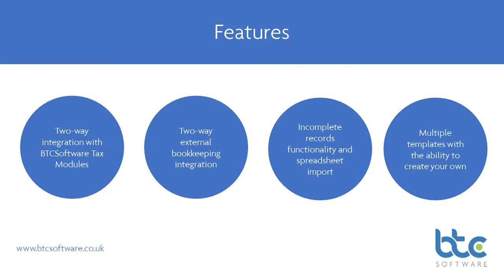Here are a few features of accounts production. You have two-way integration with BTC software tax, whether that be the partnership, corporation tax, or individual tax returns. You've got two-way external bookkeeping integration, which we'll look at in the demonstration. There's also incomplete records functionality, which is a kind of mini bookkeeping package. If you're used to manually keying figures directly in, or if you've got bank receipts, payments and receipts, you can log those directly into BTC software and then export that into an extended trial balance.